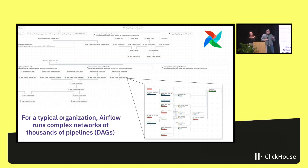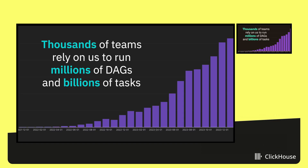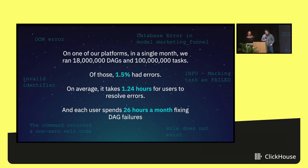If you look inside the context of a single customer or user of Airflow, you start with one pipeline, then write a couple of pipelines, and eventually end up with this whole mess of pipelines that all interact with each other — owned by different teams, working with different data, running on different schedules. At the scale that we operate, we have billions of tasks running on our platform. Taking a snapshot of one of our platforms: in a single month, we ran 18 million DAGs and 100 million tasks.